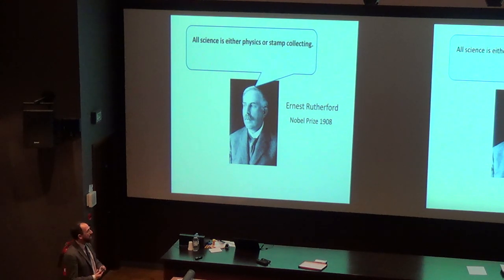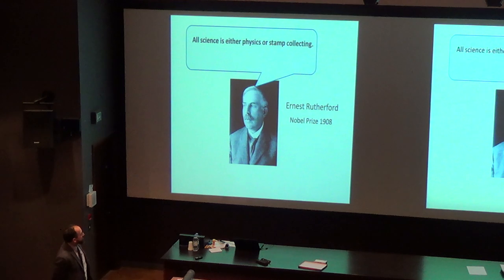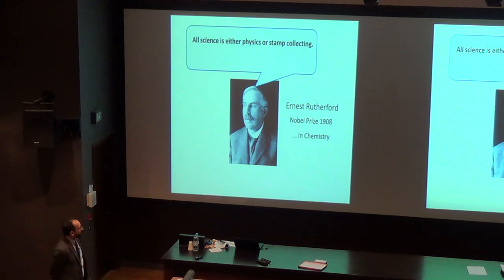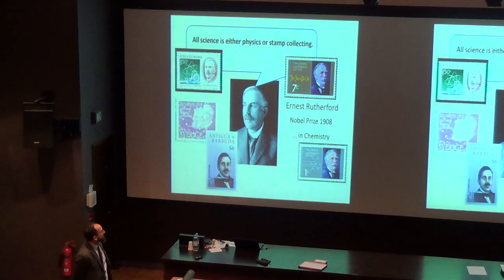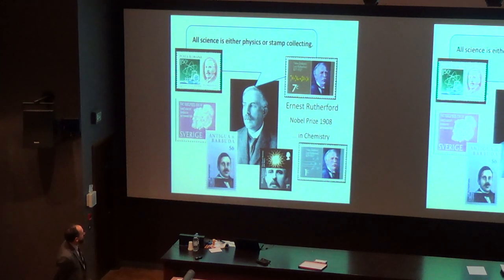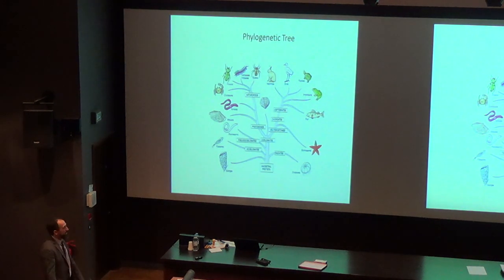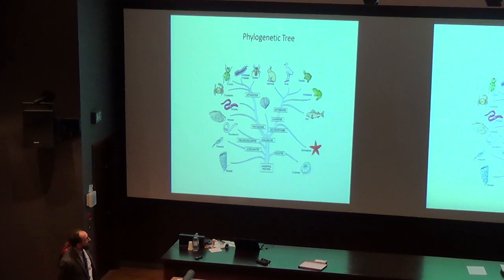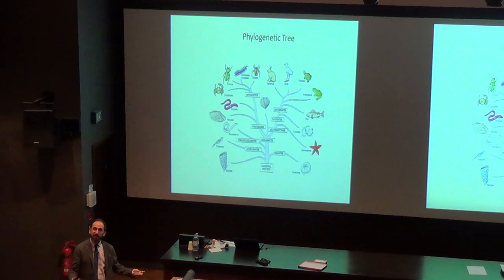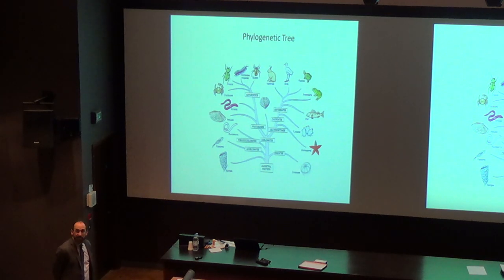What Rutherford meant is that the way physicists classify things is somehow superior — extremely precise, while other fields are not as precise. Rutherford must have been really annoyed because his Nobel Prize was actually awarded in chemistry. And to make up for it, he got his face on a lot of stamps later in life. The point is: if you discover a new organism in biology, you have no way of knowing if your classification is complete — you might have to put new animals on the tree at some later time.